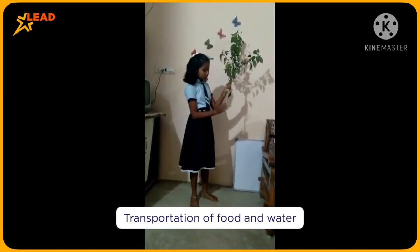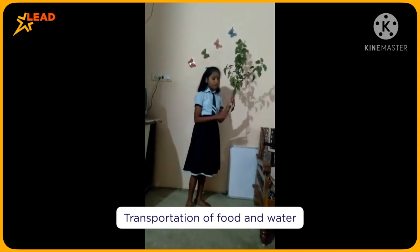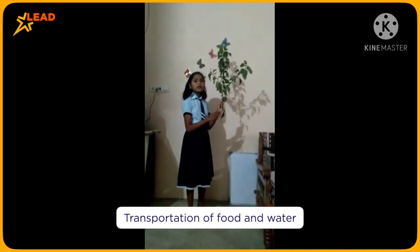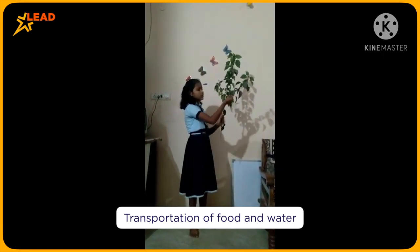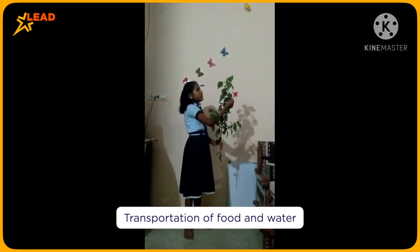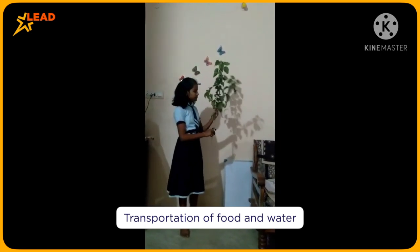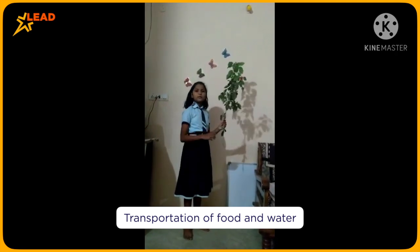The roots absorb the water from the soil and then transport it to the xylem, and the xylem transports all the water from the stem to the flower and to all parts of the plant. The xylem transports the food to all parts of the plant.